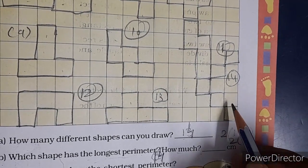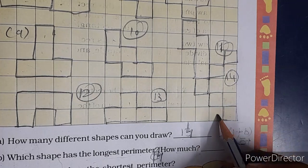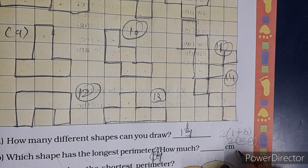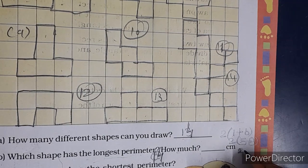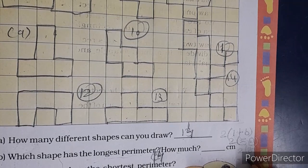So length is the longest. 1, 2, 3, 4, 5. Breadth is the longest. 1, 2, 3. So 5 plus 3, 8. It is our 16.